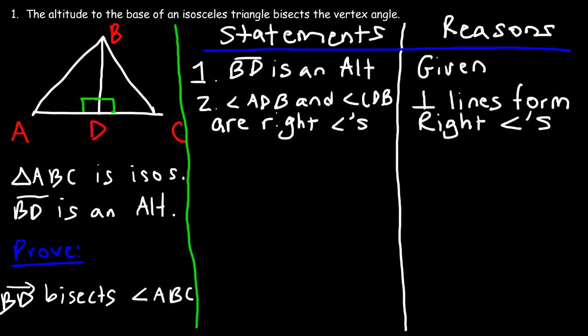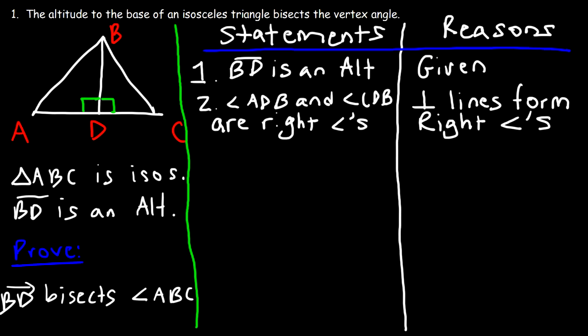Now, what's our next step? Let's focus on our goal. In order to prove that BD bisects angle ABC we need to show that these two angles are congruent, and we can do that if we can prove that the two triangles are congruent. We're dealing with right triangles because angle ADB and angle CDB are right angles, so we may be able to use the HL postulate — the hypotenuse-leg theorem.